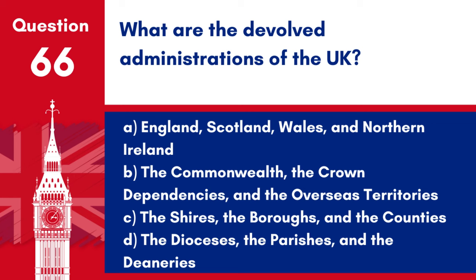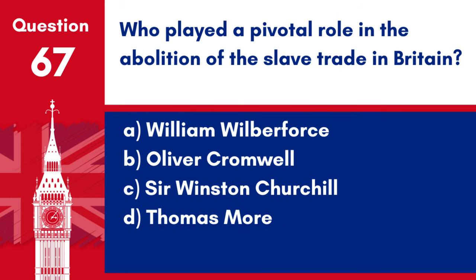Question 66. What are the devolved administrations of the UK? a. England, Scotland, Wales and Northern Ireland. b. The Commonwealth, the Crown Dependencies and the Overseas Territories. c. The Shires, the Boroughs and the Counties. d. The Dioceses, the Parishes and the Deaneries. Answer: a. England, Scotland, Wales and Northern Ireland. The devolved administrations in the UK refer to the governments of Scotland, Wales and Northern Ireland, each with varying degrees of legislative power separate from the UK Parliament.